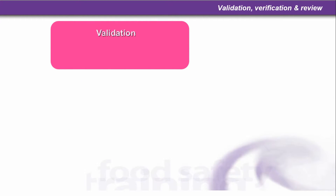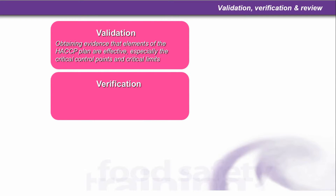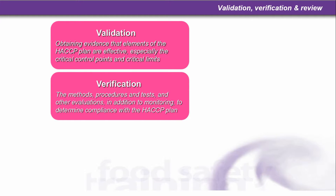Validation, Verification and Review. Validation is obtaining evidence that elements of the HACCP plan are effective, especially the critical control points and critical limits. Verification refers to the methods, procedures, tests and other evaluations in addition to monitoring to determine compliance with the HACCP plan. Validation and verification are very similar in their definitions.